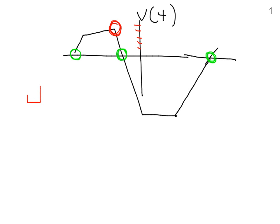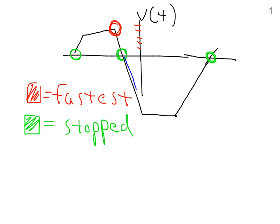So red is equal to fastest, green is stopped, and what if you want to know when the particle was moving backwards? That would be whenever the velocity is negative, that's the equivalent of moving backwards, so that's all along this blue line. Everywhere between, I'll call this V1 and V2, the particle is moving backwards.